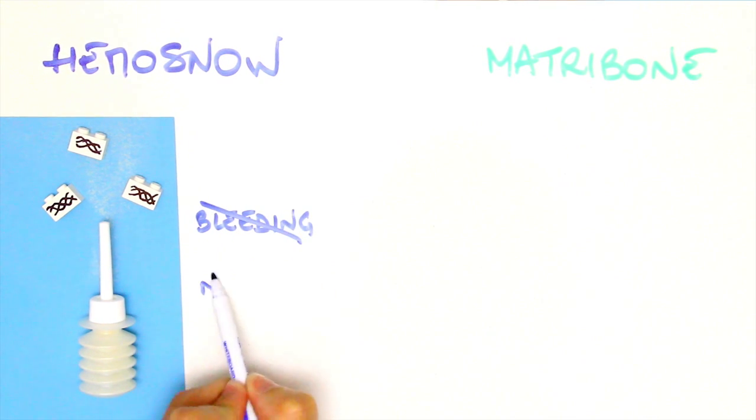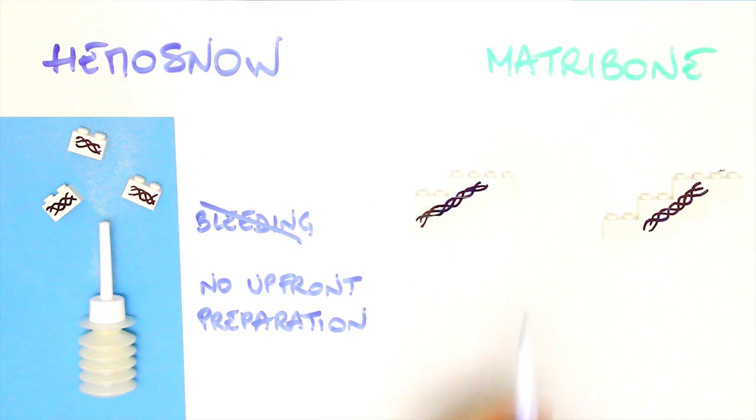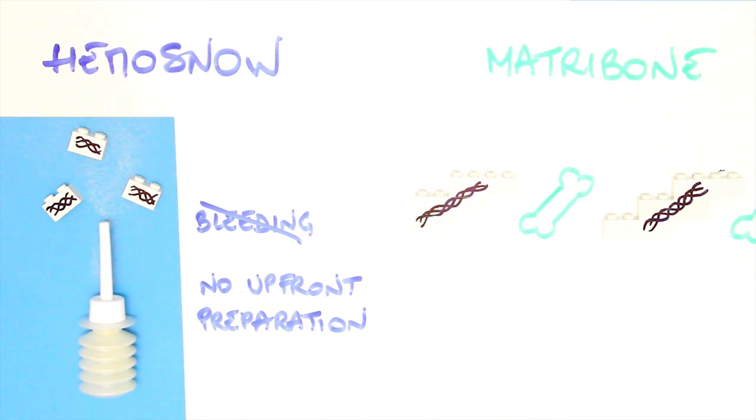It can be used several times per surgery without any upfront preparation. As for Matribone, it is a collagen matrix with an integrated bone substitute. It's easier to use than powder or grain, and is malleable, resizable, and repositionable.